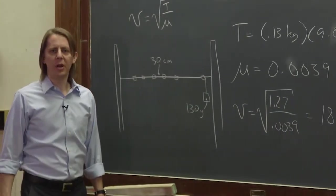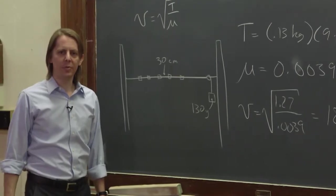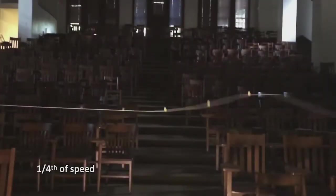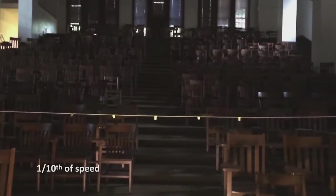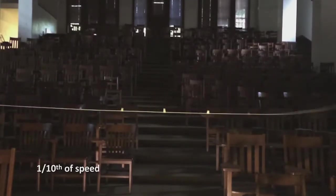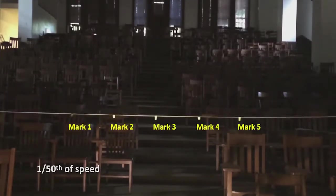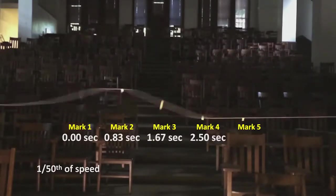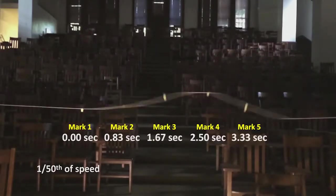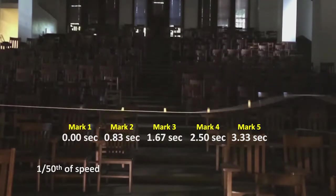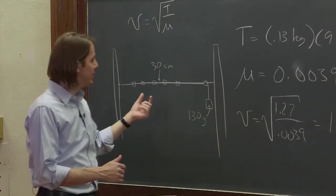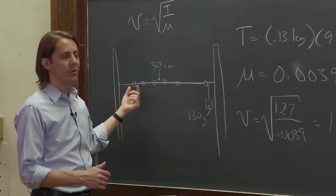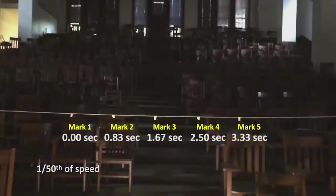I'm going to show you a pulse going down this string in slow motion. There's your slow-mo video. Now, see if you can use that information and the spacing of the flags, 30 centimeters, to figure out how fast the pulse is going.